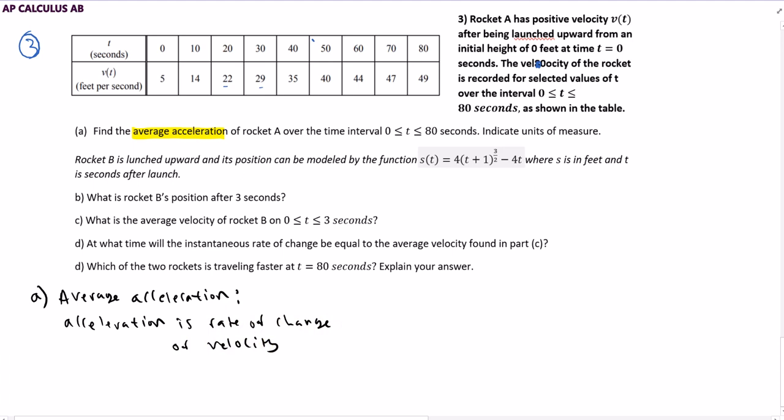And I want an average rate of change. So if you think about, usually we're given some function and asked to find the average rate of change. And basically what you're being asked to find is a secant line. So the average acceleration is simply going to be the slope of the secant line between the two given values. And so V(80) minus V(0) over 80 minus 0.